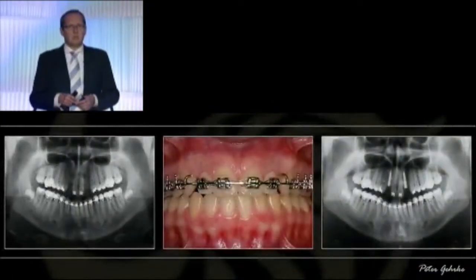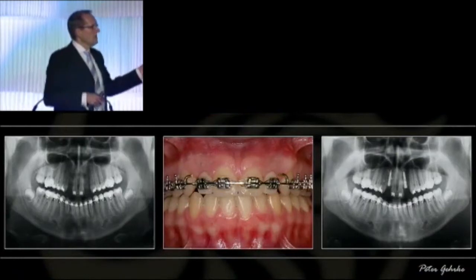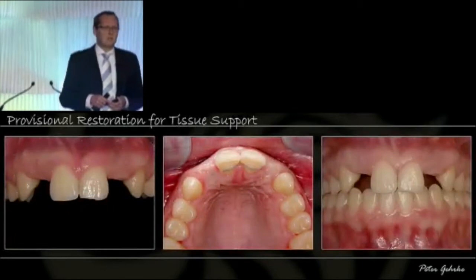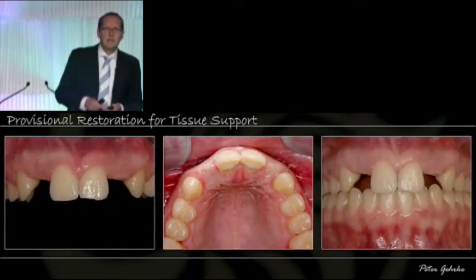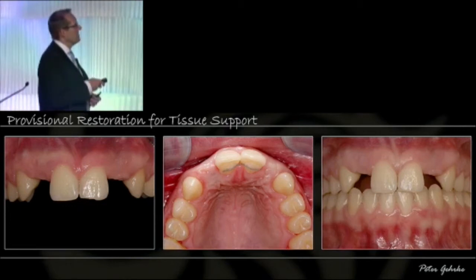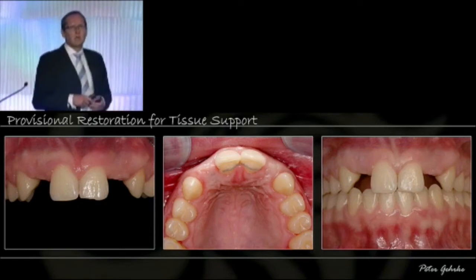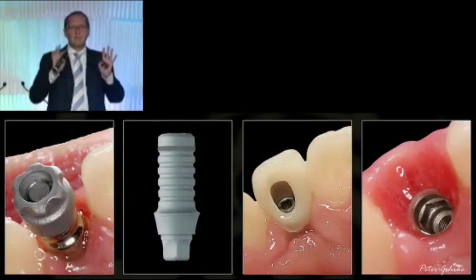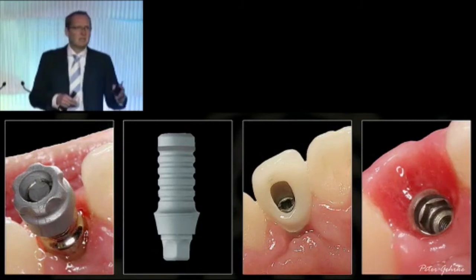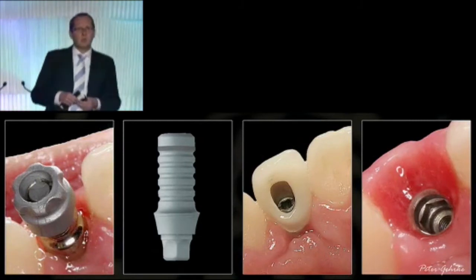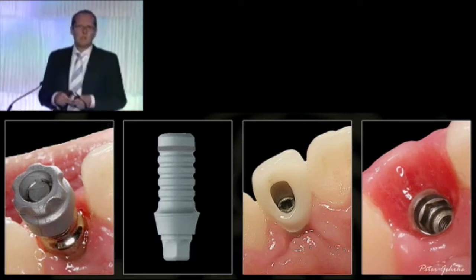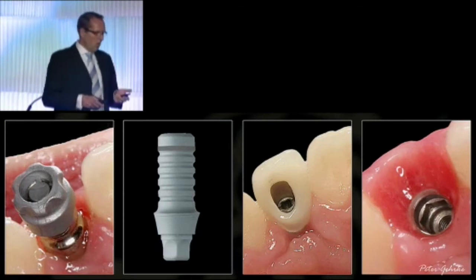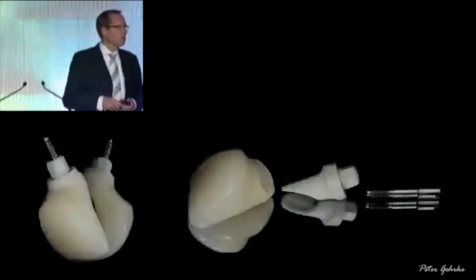Talking about provisional restorations and PEEK abutments, I'd like to share this particular case: a young lady with congenitally missing lateral incisors. She went through orthodontic treatment, the space was kept open, and after stage-one surgery and healing, we are missing any proximal aesthetics — there is no papilla, not even the illusion of a papilla. So it is about manipulating tissue in that area to create the illusion of papillae. We use PEEK abutments — in this instance Protect abutments — doing an index at stage-one surgery and delivering an individualized provisional restoration at stage-two surgery.